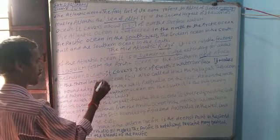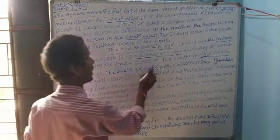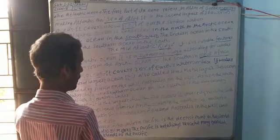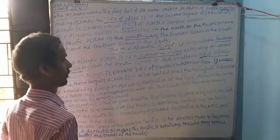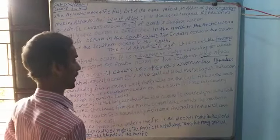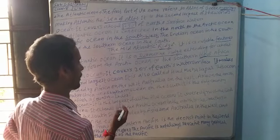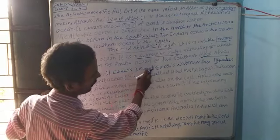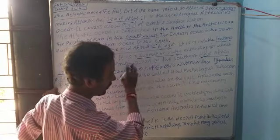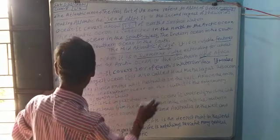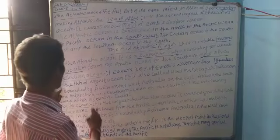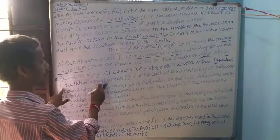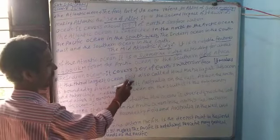The Indian Ocean covers about 20% of the water surface. It is also called Hind Mahasagar. It makes the third largest ocean in the world.